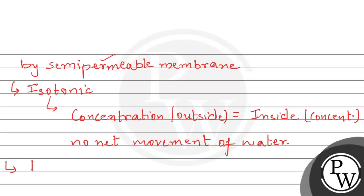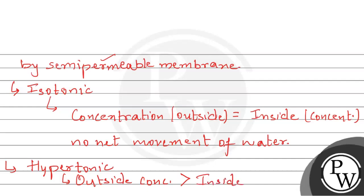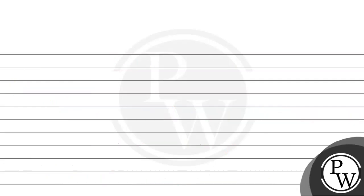Second, जो है वो होता है hypertonic solution. इसमें outside concentration जो होती है, that is higher than the inside concentration of the solute. यानिके इससे water जो है, वो cell को छोड़ देता है।